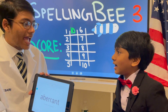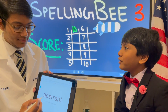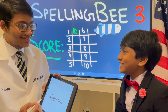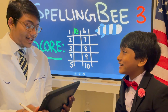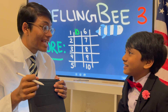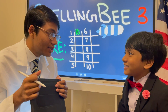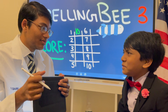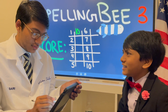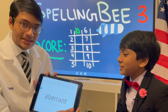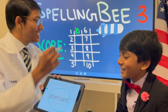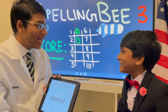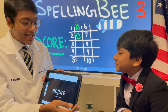Next word: aberrant. Aberrant. Can you use that in a sentence? Of course. His dissertation was aberrant from the standard proposal. A-B-B-A-R-E-N-T? What? Well, you still have eight more tries. Next word.